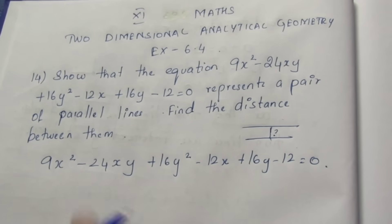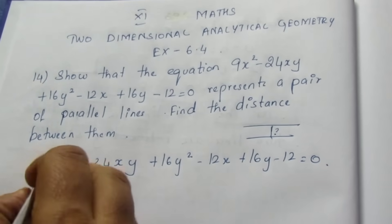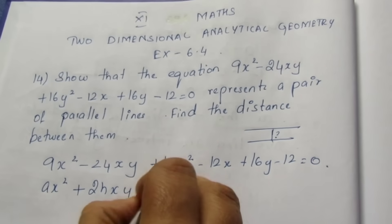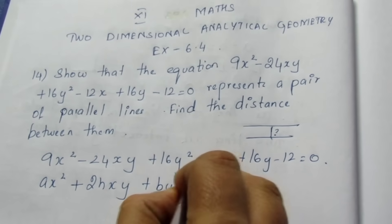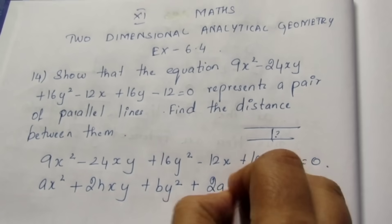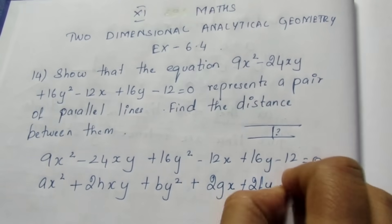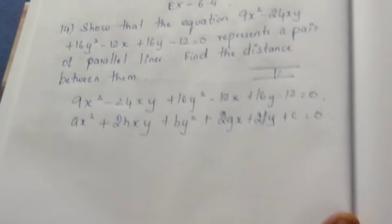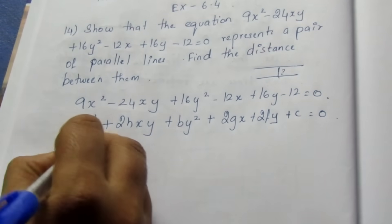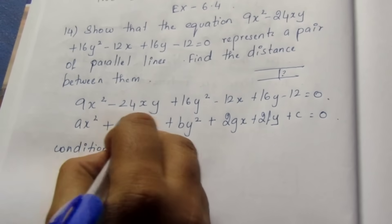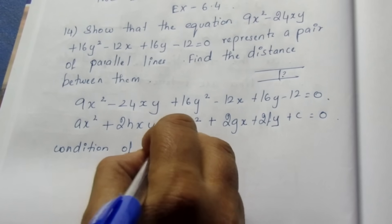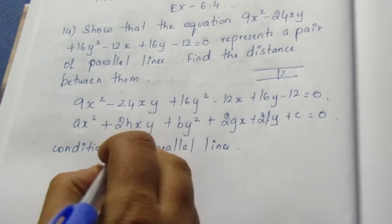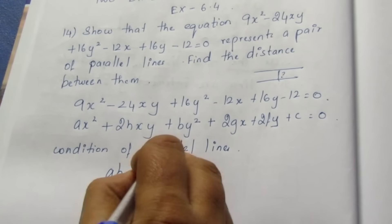The combination of two equations follows the general form: ax² + 2hxy + by² + 2gx + 2fy + c = 0. The condition for a pair of parallel lines is ab - h² = 0.